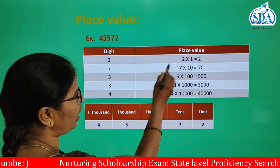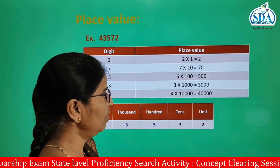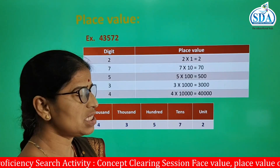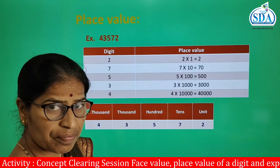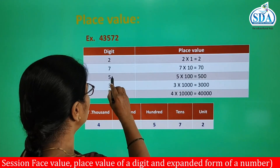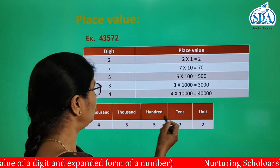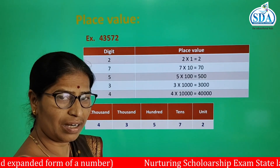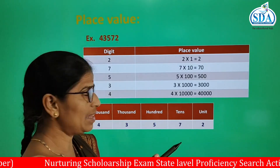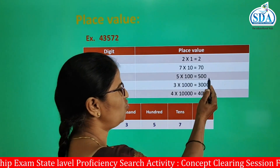Suppose we have to find the place value of digit 2, and it is at the units place. Therefore 2 multiplied by 1 is equal to 2, which is the place value of digit 2 in this number. In the same way, we can find the place value of digit 5. Since 5 is at the hundreds place, the place value will be 5 multiplied by 100, that is 500.